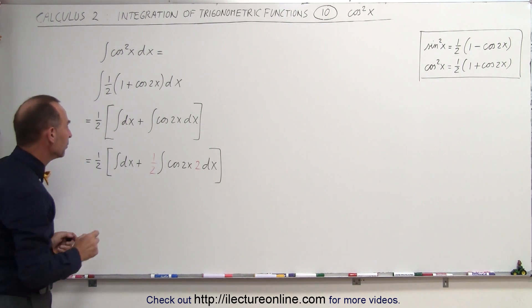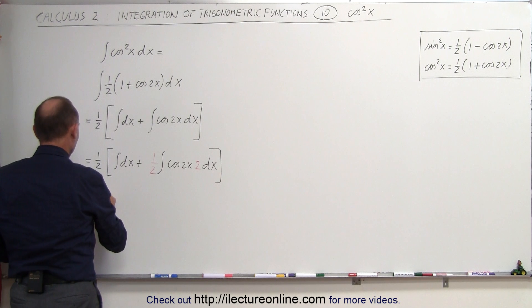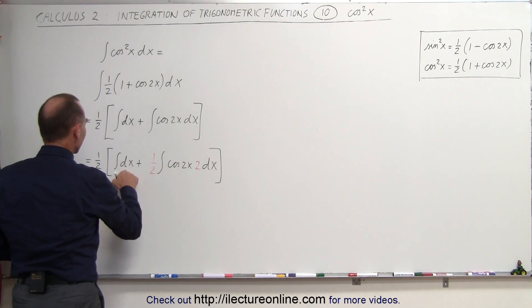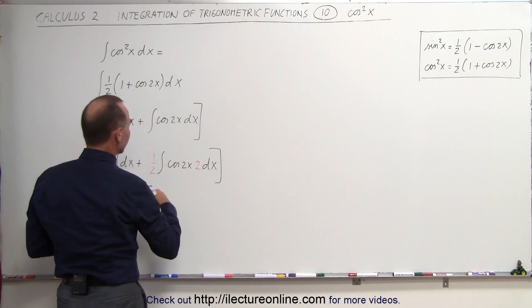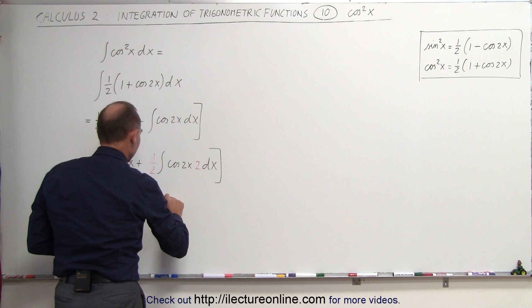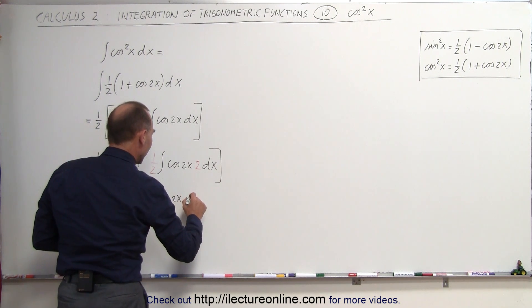Now we can go ahead and integrate both integrals. This is equal to 1/2 times the integral of dx would be x plus 1/2 times the integral of this would be the cosine, the integral of the cosine is the sine of 2x.